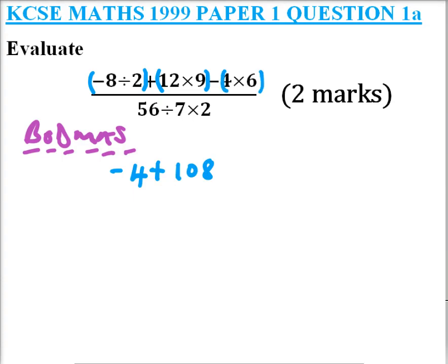Then we have the other one is 4 times 6, so it is minus 24, all over divided by... Now here we start the division: 56 divided by 7 that is 8, and we multiply by 2.